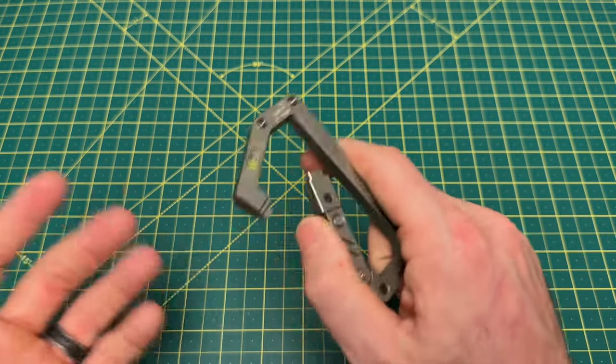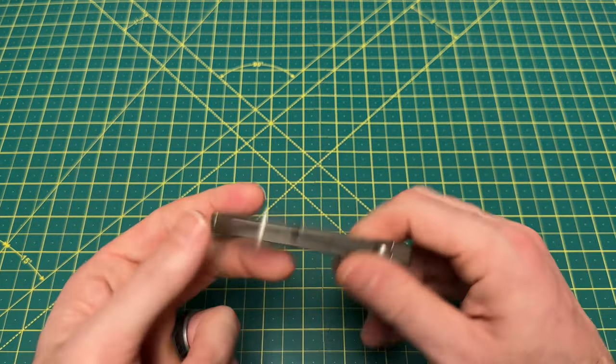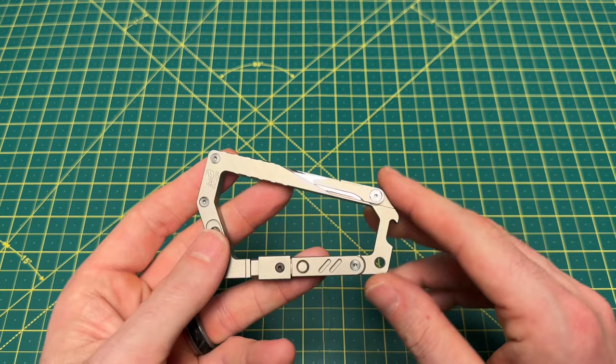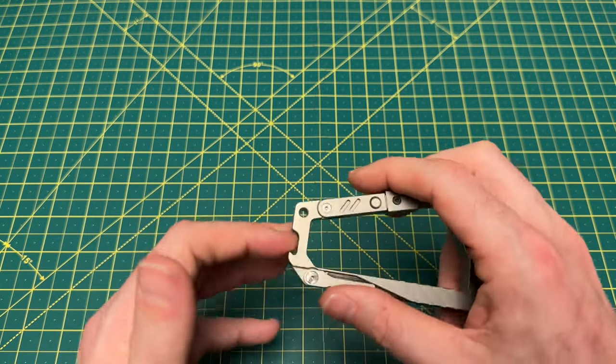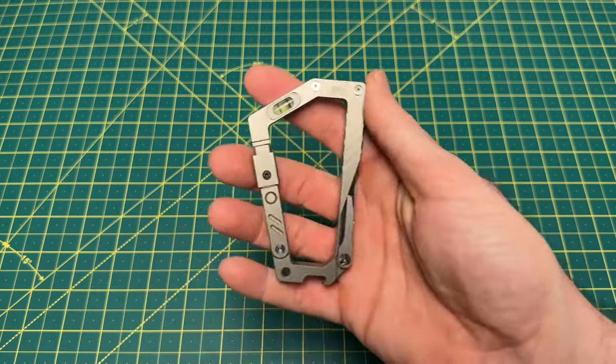But of course, the carabiner itself. I will always be carrying a water bottle on this. I can strap my camera. A lot of versatility in this little guy. And of course, the bottle opener. You know your boy is going to use the bottle opener. So yeah, really, really impressive carabiner.